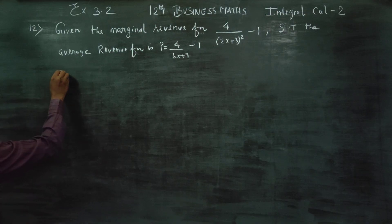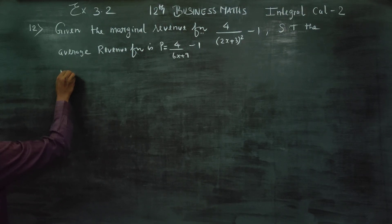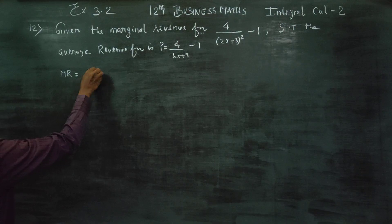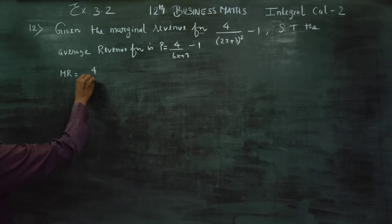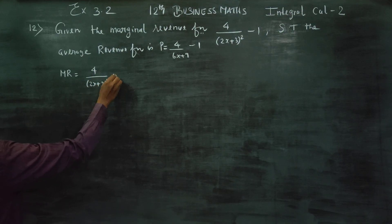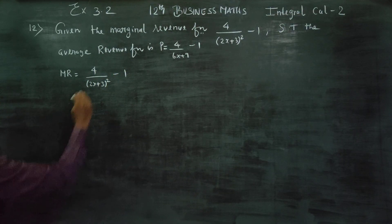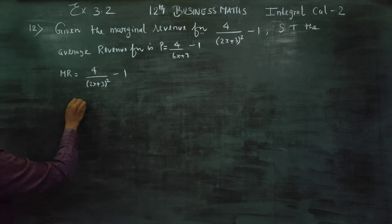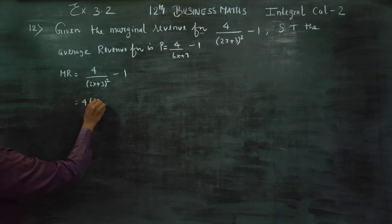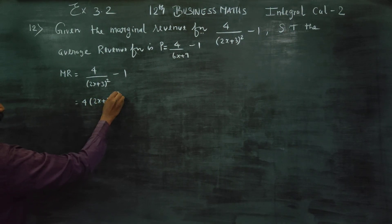First, you can see MR — marginal revenue — MR equals 4 by (2x + 3) whole square minus 1. This can be written as 4 into (2x + 3) power minus 2, minus 1.